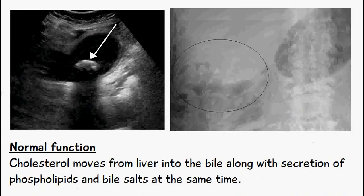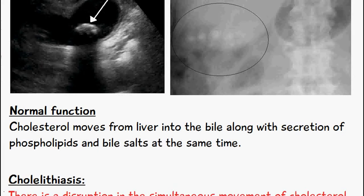The normal function and movement of cholesterol and bile is that cholesterol moves from the liver into the bile, along with the secretion of phospholipids and bile salts at the same time.